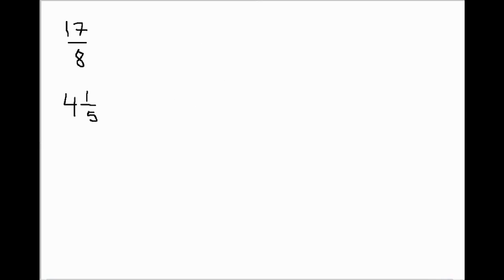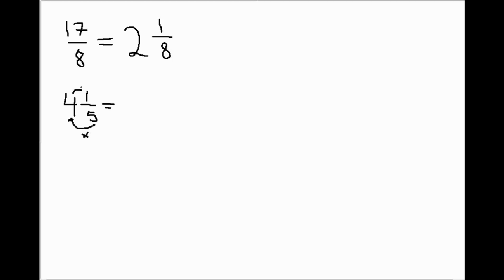Let's look at two more examples of equivalent ways to write these types of fractions. We start with 17 over 8. A fraction is a division question, so the question is 17 divided by 8. How many 8's fit into 17? Two — but that doesn't get us all the way to 17. We have a remainder of 1, and the denominator stays the same. For the next one, to write 4 and 1 fifth as a fraction, we multiply our denominator by our whole number: 5 times 4 is 20, then add the numerator: 20 plus 1 is 21. The denominator stays the same.